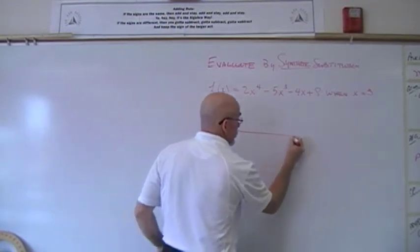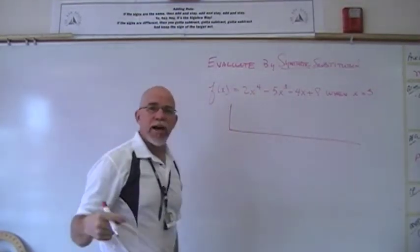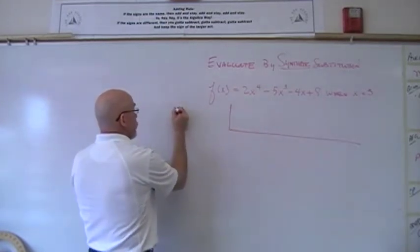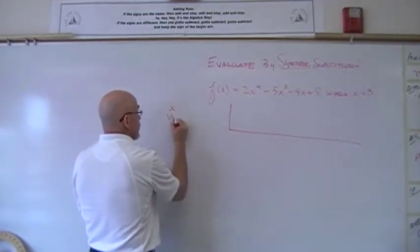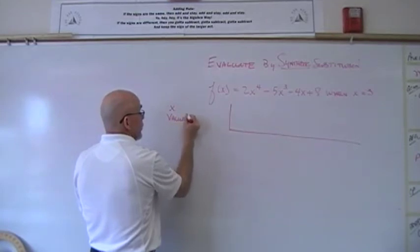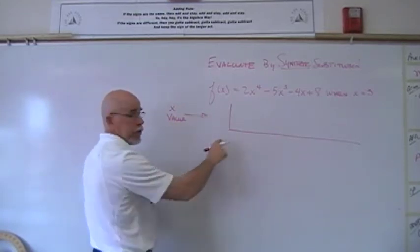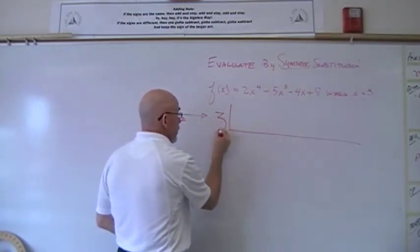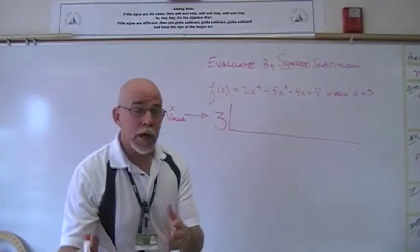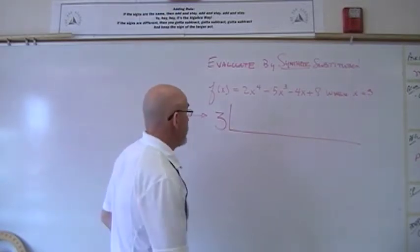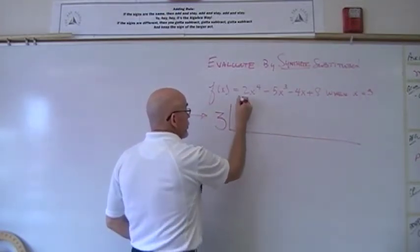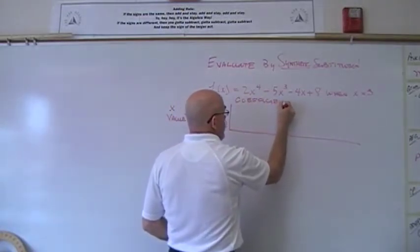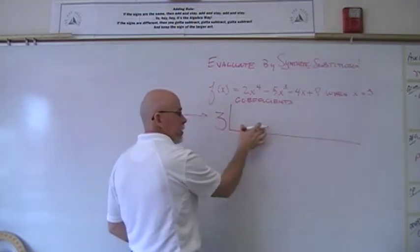What we do with synthetic is kind of shortcut it, makes it a little bit faster. We write what the x value given to you is, draw this box like this. To the left of this line we write the x value. We were told that x was 3, so we write 3 on the outside. Then we write the coefficients inside here.